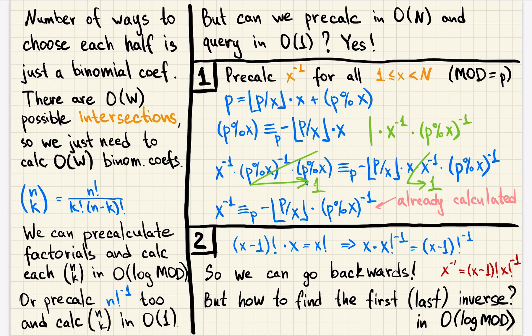So to calculate the number of paths, we will iterate over the intersection and multiply the number of ways to choose the first half and the second half. But those numbers are just number of paths that only go right or down in grid without any limitations. So that's a binomial coefficient we discussed earlier. Since there are only linear number of possible intersections, we just need to calculate linear number of binomial coefficients. How to do that?